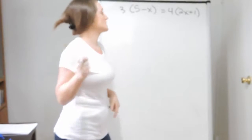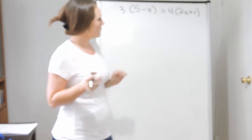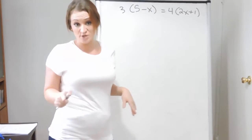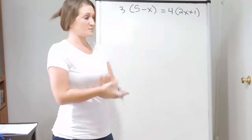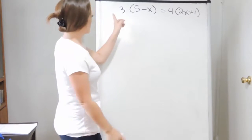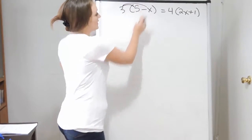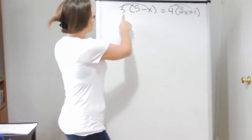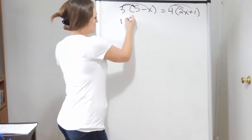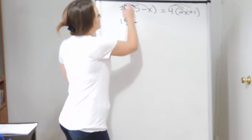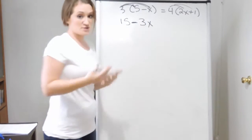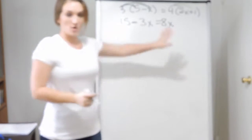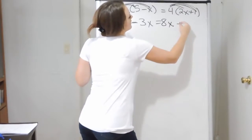Continuing with equations that have multiple steps, let's work on this next one. Always assess the equation first. We look at clearing fractions — we don't have those. But we do have parentheses, which typically means to distribute. Here we have a 3 on the left side that we need to distribute: 3 times 5 gives us 15, drop down the minus sign, and 3 times x is 3x. That equals 4 times 2x, so 4 times 2 is 8, drop down the x, and then 4 times 1 is 4.